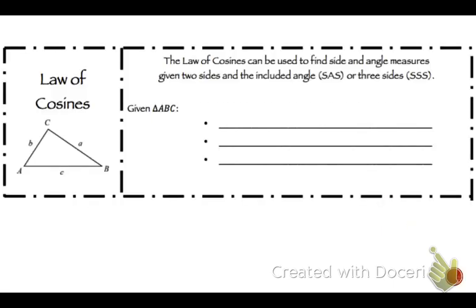So, given triangle ABC, you use Law of Cosines when you have side-angle-side or when you have side-side-side. So when you're given two sides with the angle in between or three sides.